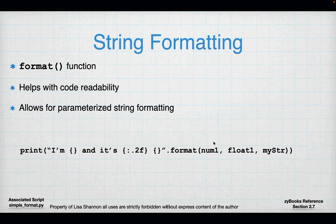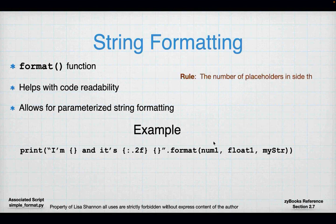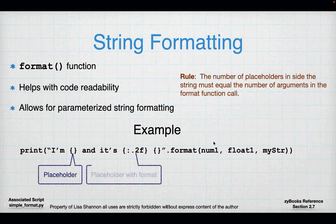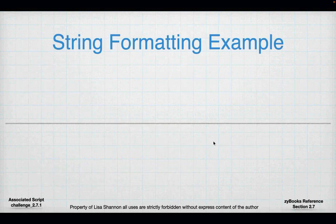Here's a quick example: num1 is 42, float1 is 3.415, and meister is 'pi day'. The output is going to be 'I'm 42 and it's 3.42 pi day'. Here's another example — if you have a format specifier like :.2f and you do not give it the right type, you're going to get a syntax error. If you try to put a string into a float format specifier, it's going to give you a syntax error.